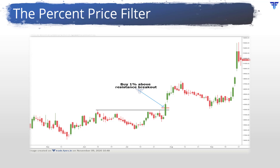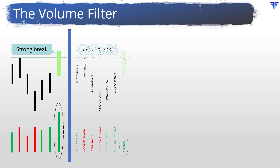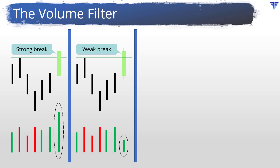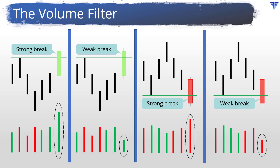Continuing with our earlier example, using the 1% price filter, one way you could have traded this resistance breakout would be to buy once the price rose more than 1% from the breakout level on the same candle. This is arguably one of the most important filters for the simple fact that volume is independent of price and talks about the force behind the price move. Volume is plotted in a separate panel, usually below the price. Volume is such a critical aspect of technical analysis that we will dedicate a few videos later only for talking about volume. For now, we will just focus on one aspect of volume.